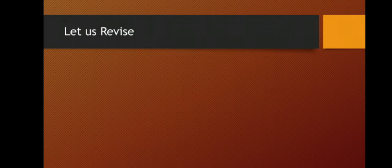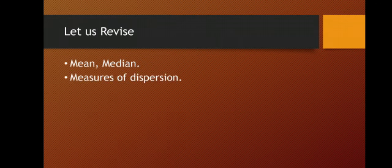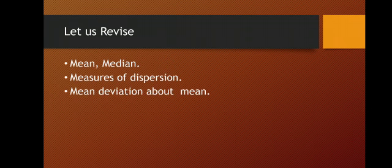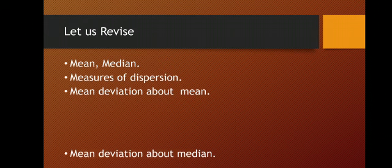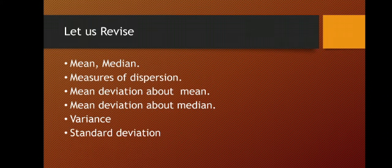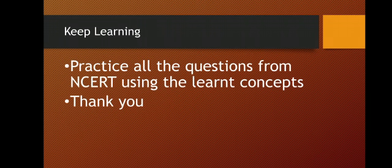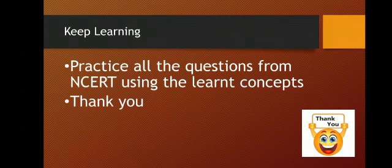Let us revise what all things we have discussed and which concepts we have touched in this module. We revised mean and median. The new concept was measure of dispersion — how much the data is deviated, dispersed, or scattered. Then mean deviation about the mean, mean deviation about the median, variance, standard deviation, and finally the coefficient of variation. Hope all the concepts are clear. Keep learning, children. Practice all the questions from NCERT using the learned concepts. Thank you everyone, and have a nice day.